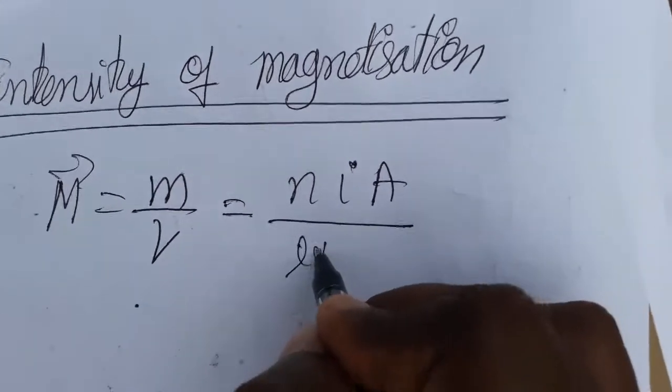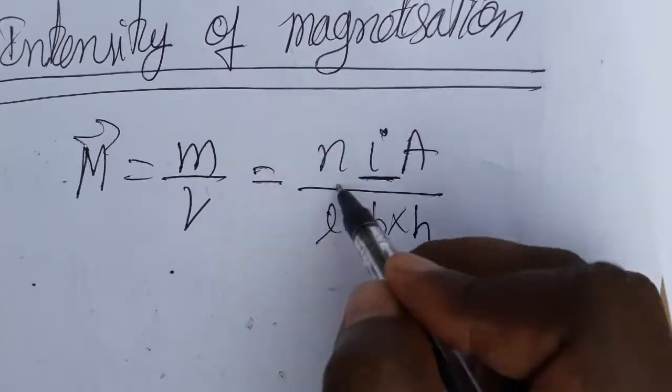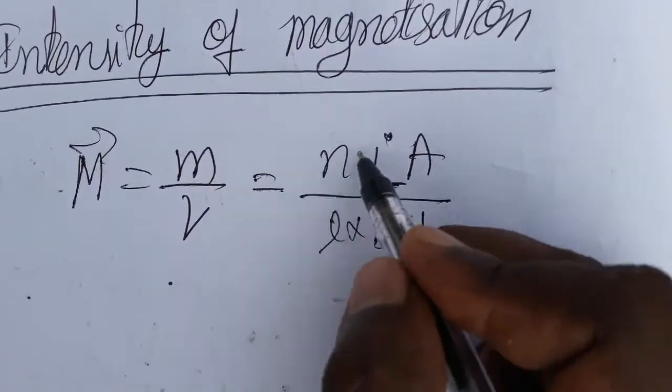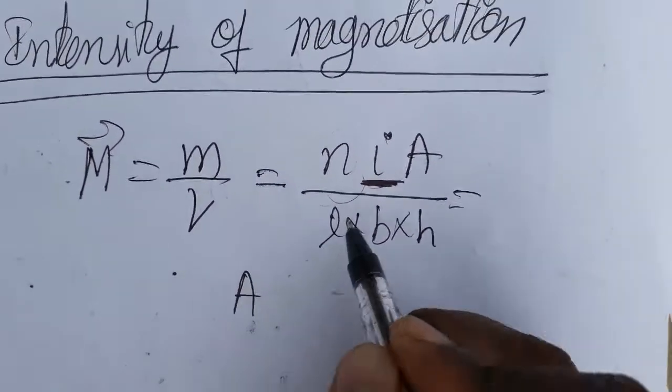is length into breadth into height. Today we are going to discuss SI unit and dimensional formula. N is the number of turns because we don't have any unit for it. Current is ampere.